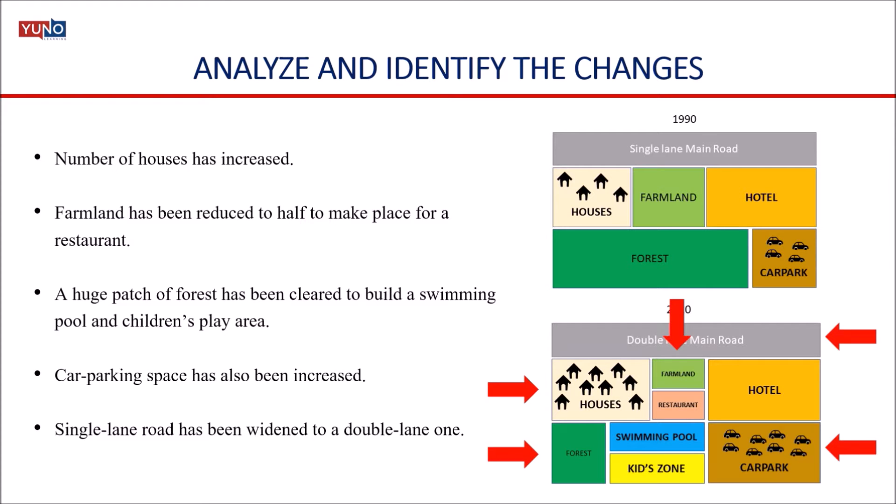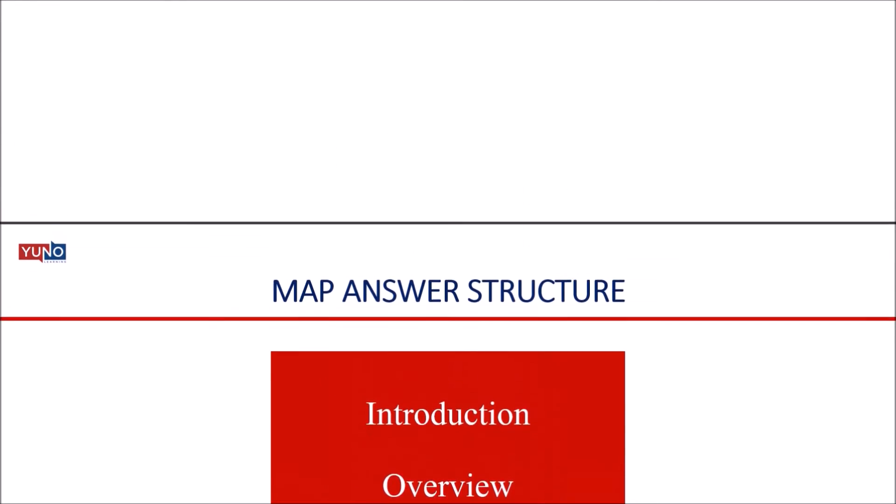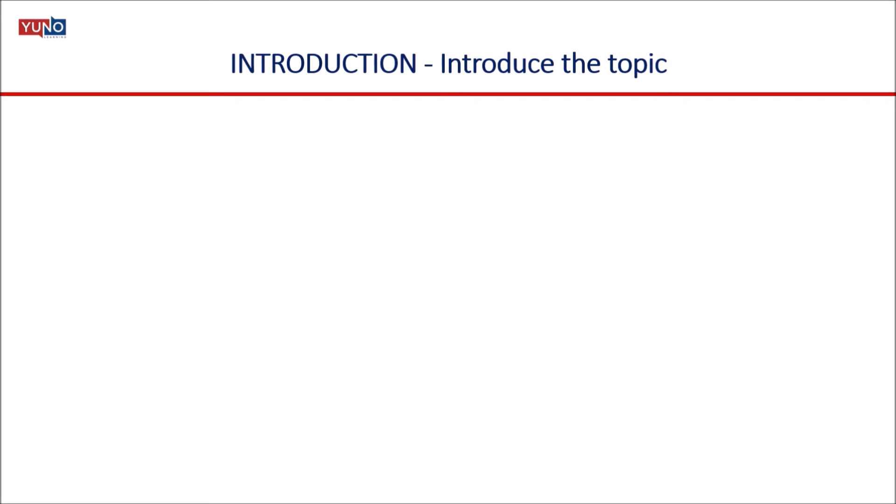Now you have to elaborate on these points in your map summary. Once you have analyzed and identified the different changes between the two maps, you can start writing your response. To give a proper structure to your response, you can divide the content into four paragraphs: introduction, overview, body paragraph one, and body paragraph two. This is the outline we are going to use to structure the map summary.